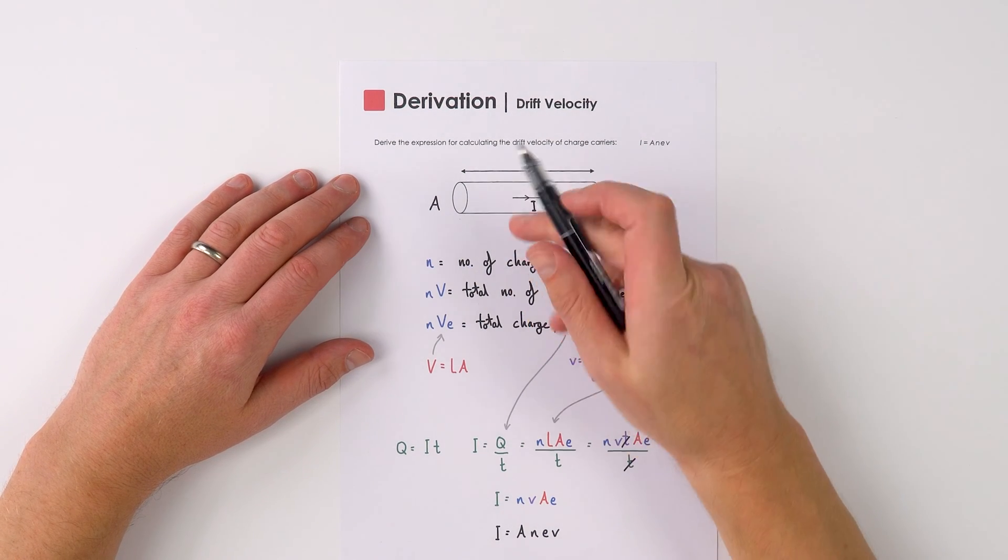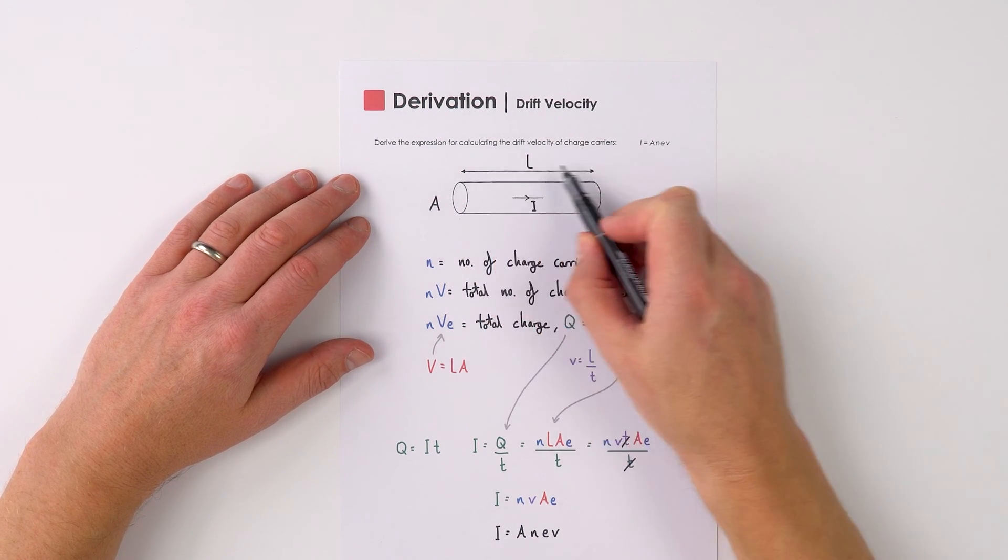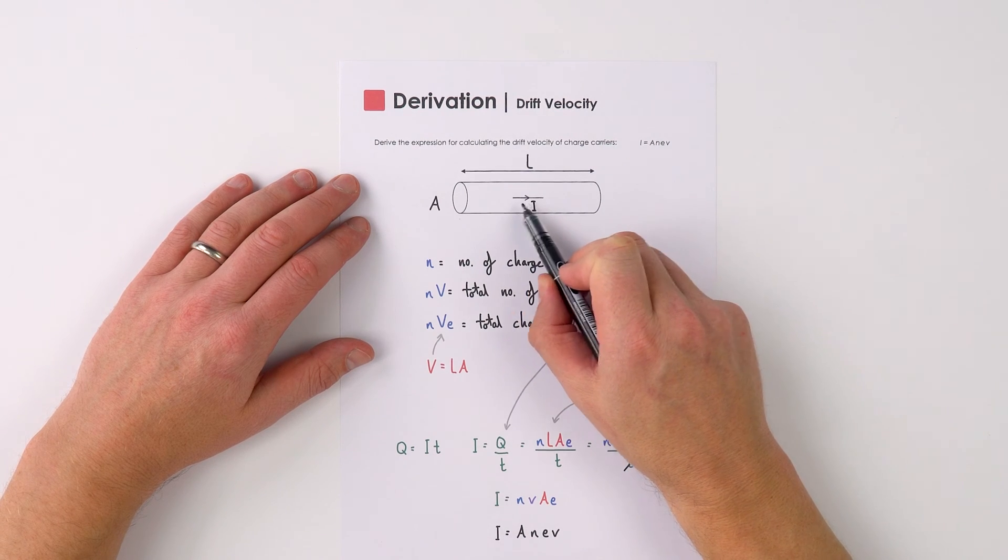Imagine we have a piece of wire, cross-sectional area A, its length L, and there's the current I which is flowing in it.